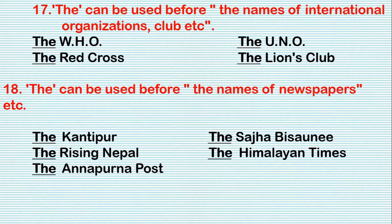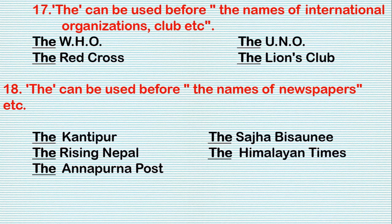Rule 17: 'The' can be used before the names of international organizations and clubs. For example: the WHO, the UNO, the Red Cross, the Lions Club, etc.